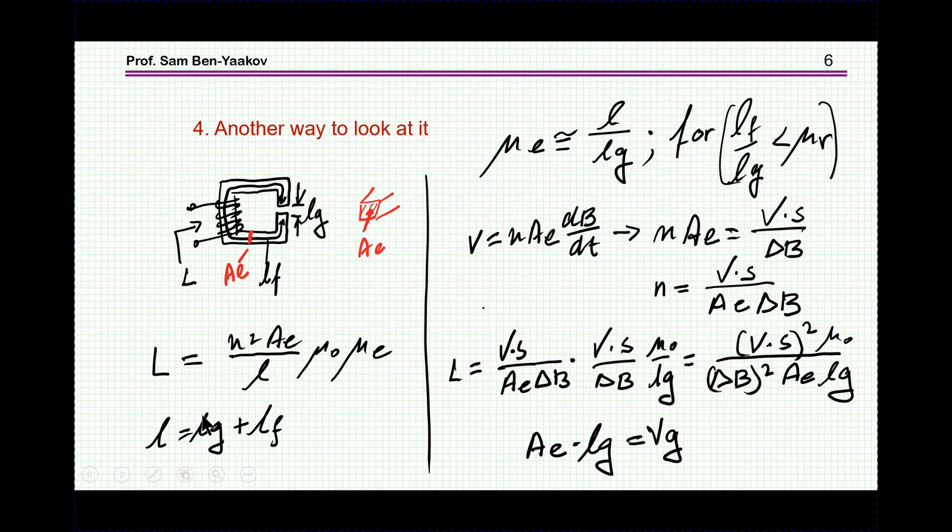Let's start with the relationship that describes the inductance of this inductor. That's N squared AE over L times mu sub zero times mu sub E. Mu sub E is the equivalent permeability of the total core. And I've shown in the video that this is approximately L over LG. Correct only in the given range when LF over LG is much smaller than mu sub R, which is the relative permeability of the ferrite.